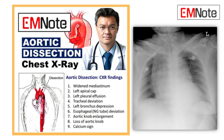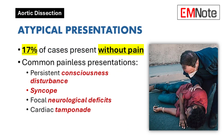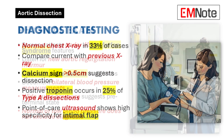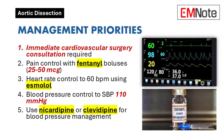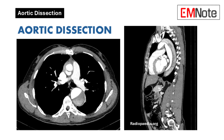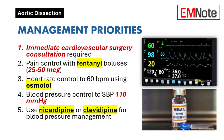We've covered pain patterns, atypical presentations, physical exam findings, and initial tests. Now, the crucial first step in management: consult a cardiovascular surgeon immediately — for all suspected cases, even type B dissections. Even if we're not sure, get them involved right away, because even type B dissections can sometimes require surgery. It's always better to be safe than sorry.